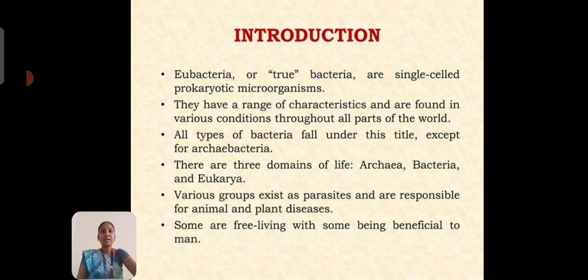Eubacteria, or true bacteria, are single-celled prokaryotic organisms. They have a range of characters and are found in various conditions throughout all parts of the world. All types of bacteria fall under this title, except archaebacteria. There are three domains of life: archaebacteria, eubacteria, and eukarya. Various groups act as parasites and are responsible for animal and plant diseases. Some are free-living, with some being beneficial to humans.